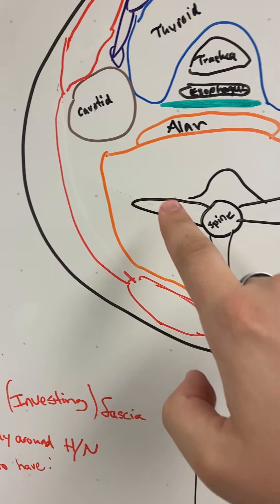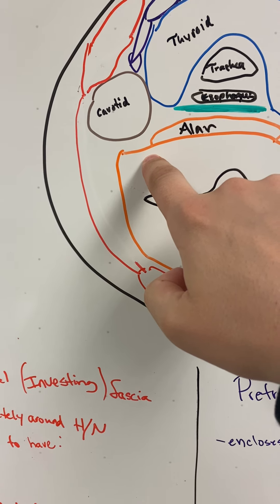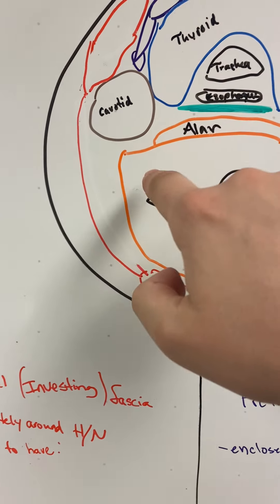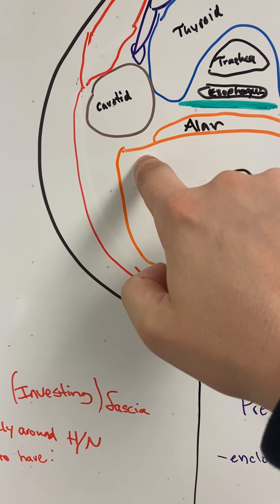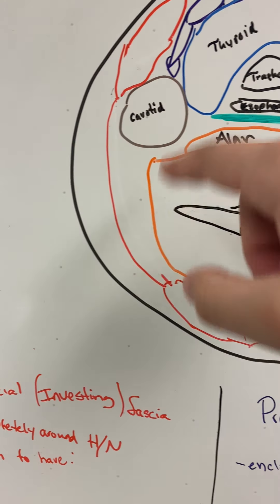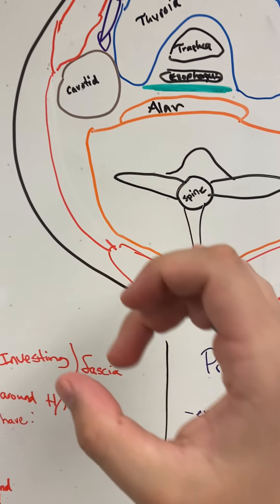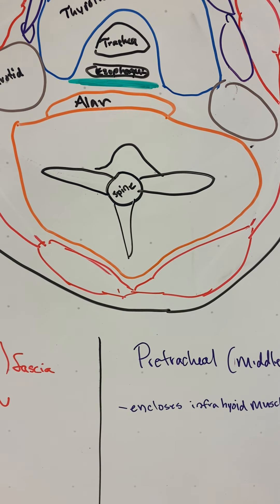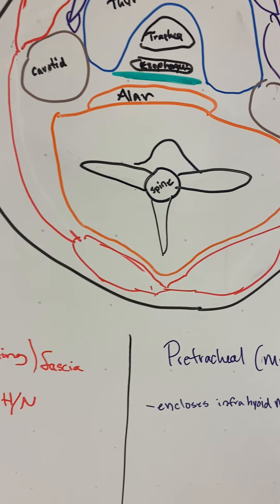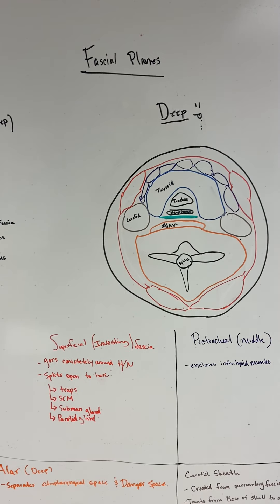This is the investing layer, and then this—excuse me, I think I said pre-vertebral and I meant pre-tracheal—so pre-vertebral is right here. Technically these are all connected; there's no space between them, but all those fascia create the carotid sheath. And obviously we know that inside the carotid sheath are very important things. So that's fascial planes.